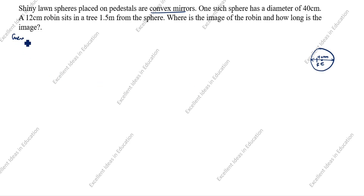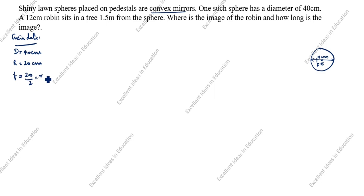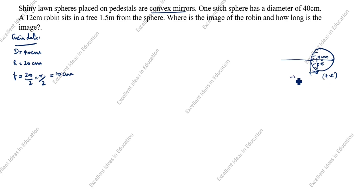Given data: diameter is given as 40 centimeters, radius is 20 centimeters. Focal length f equals 20 divided by 2, which is 10 centimeters — and it is positive because this is a convex mirror. For a convex mirror, v and f are on this side, which is always positive. I'll draw the line showing f at a distance of 10 centimeters. This side is always positive; the other side is always negative.